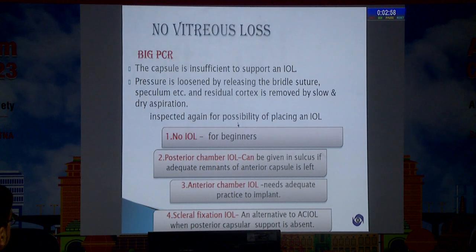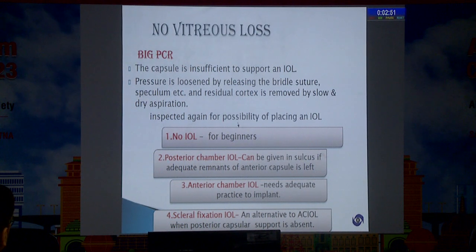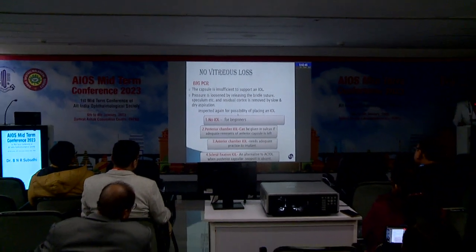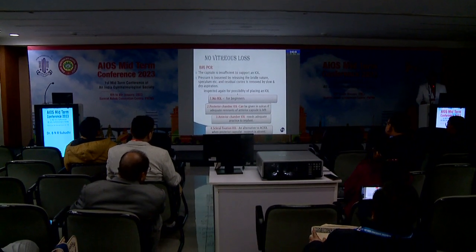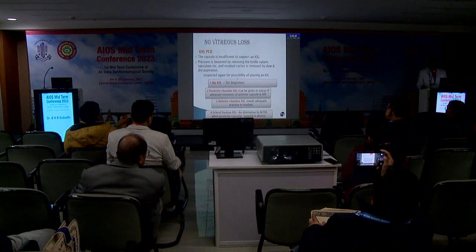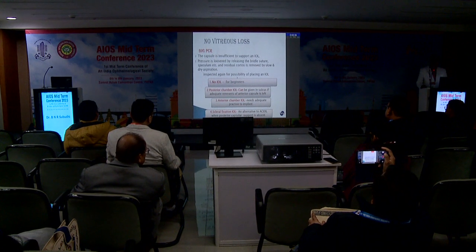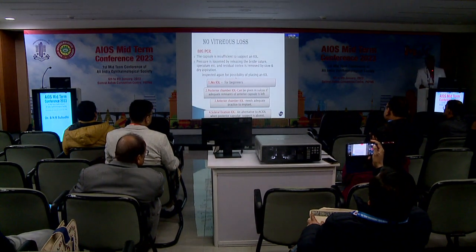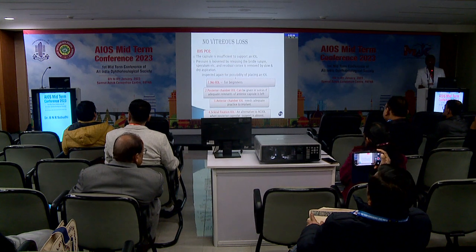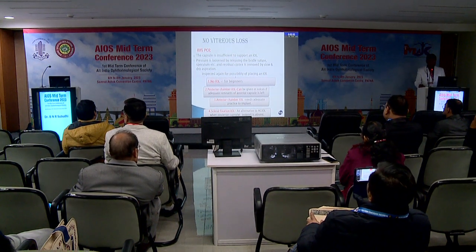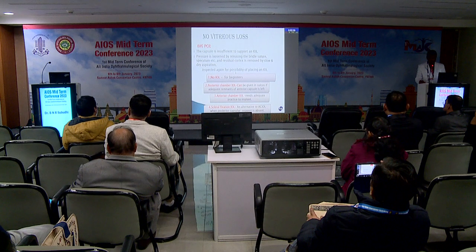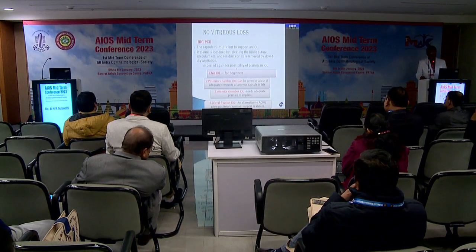If there's no vitreous loss but still there's a big PCR and the posterior capsule is not sufficient enough to support an IOL, remove as much cortical matter as possible — don't leave cortical matter, as it may induce more reaction with vitreous in the anterior chamber. After injecting viscoelastic, see whether the IOL can be placed in the remnant of the posterior capsule. If you are very sure you can place the IOL without disturbance, place it. Otherwise, consider two other options: the AC IOL or scleral fixation IOL.